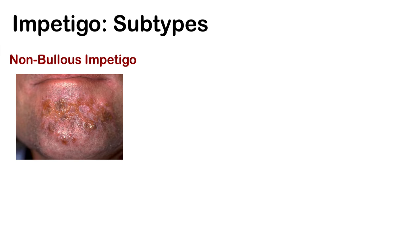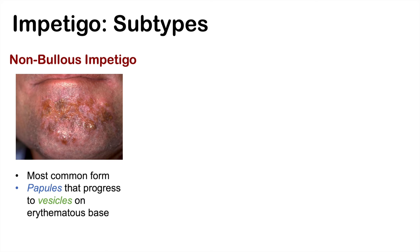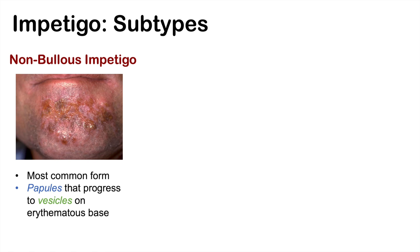There are three subtypes of Impetigo. The first is non-bullous Impetigo, which is actually the most common form. It presents as papules that progress to vesicles on an erythematous base. The second subtype is bullous Impetigo. Like its name suggests, it presents as bullae — weak, flaccid bullae filled with a yellowish fluid that can erupt.